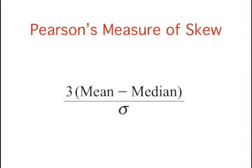The relationship between skew and the relative size of the mean and median led the statistician Carl Pearson to propose this simple and convenient numerical way of measuring skew. Remember that lowercase sigma represents the standard deviation. Verbally, this formula reads, 3 times the difference between the mean and median divided by the standard deviation.